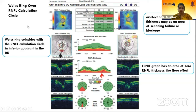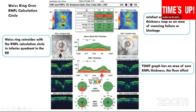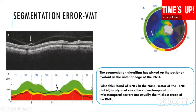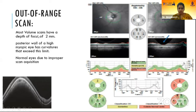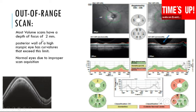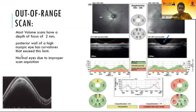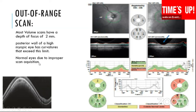This is a scan showing the vessel shadow artifact over the RNFL calculation circle, where the vessel shadow ring coincides with the RNFL scan circle. Another variety is the in-depth scan artifact; most scans are acquired at a depth of 2mm, but the posterior wall of high myopic eyes has curvatures that exceed these limits, leading to erroneous measurements due to improper scan acquisition.